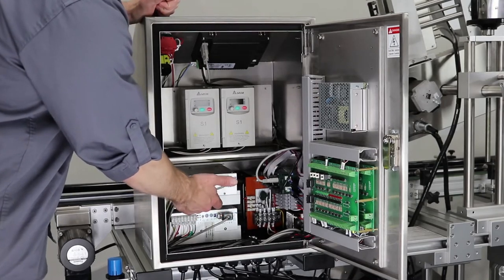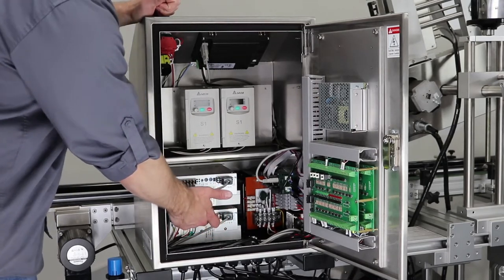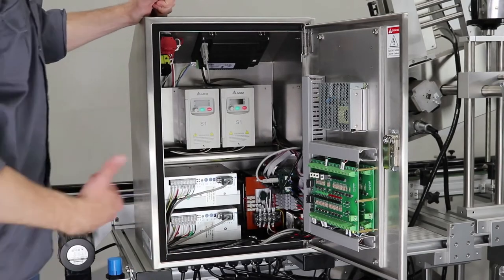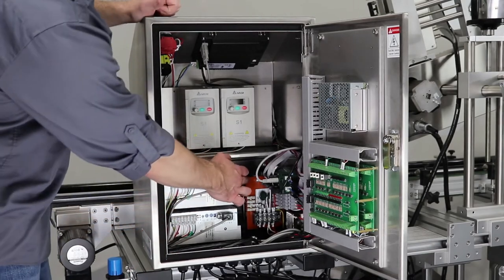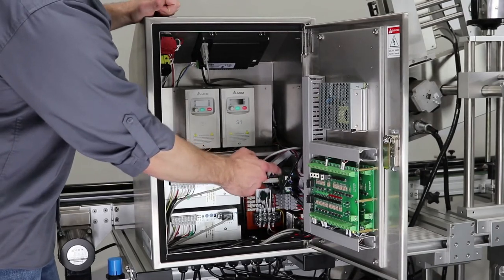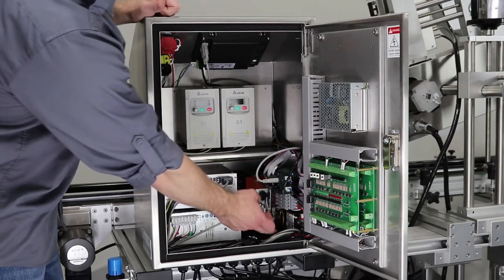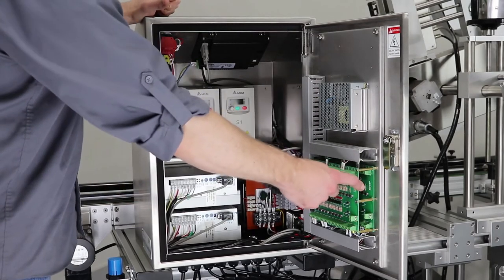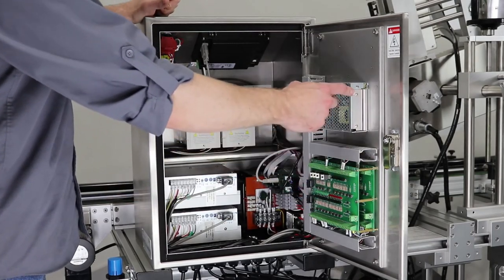You do have your stepper drives, one controls label head A, the other label head B, your transformer which takes 110 to 220 or you can bring 220 into the machine if we set it up that way. You've got a PLC, one for each head, you've got your fuses, your EMF filter, two PCB boards, one for the top, one for the bottom, and then your power supply.